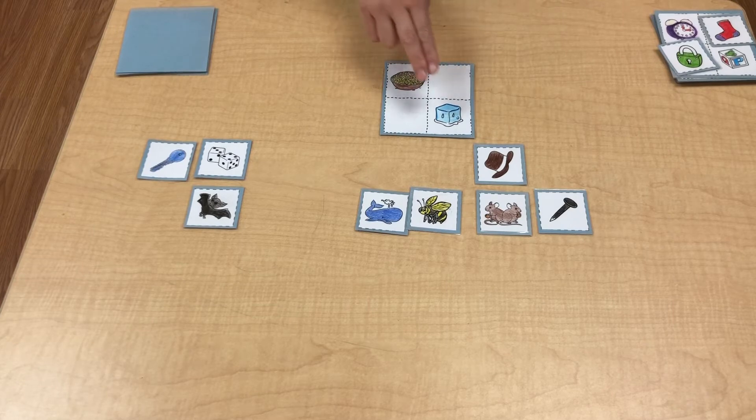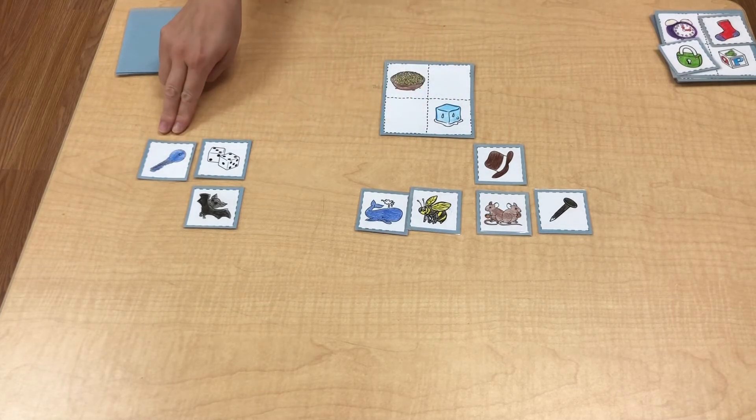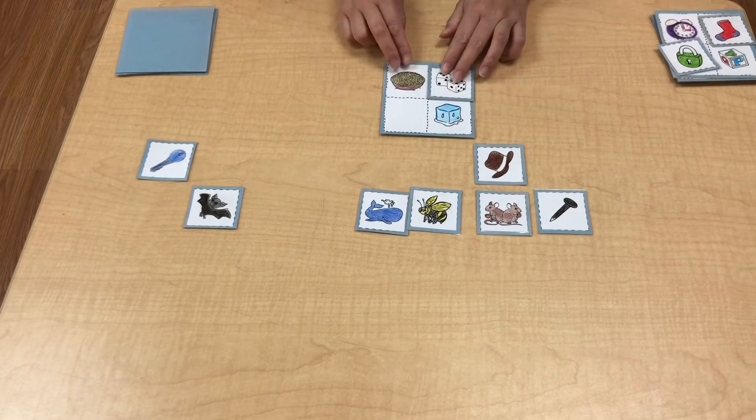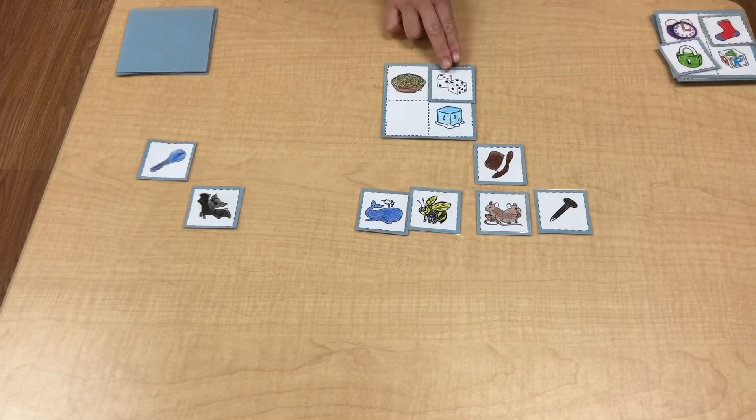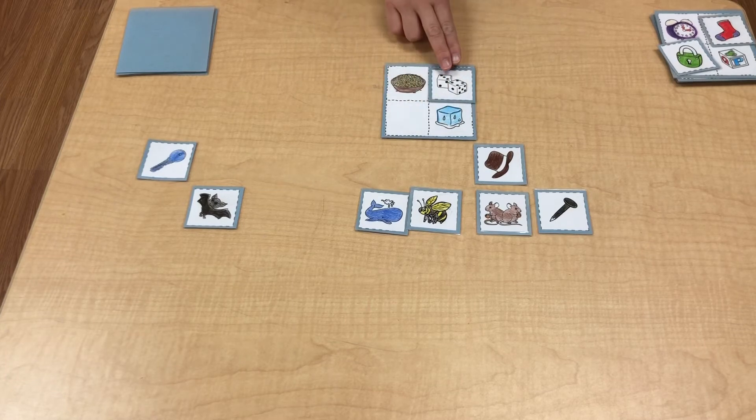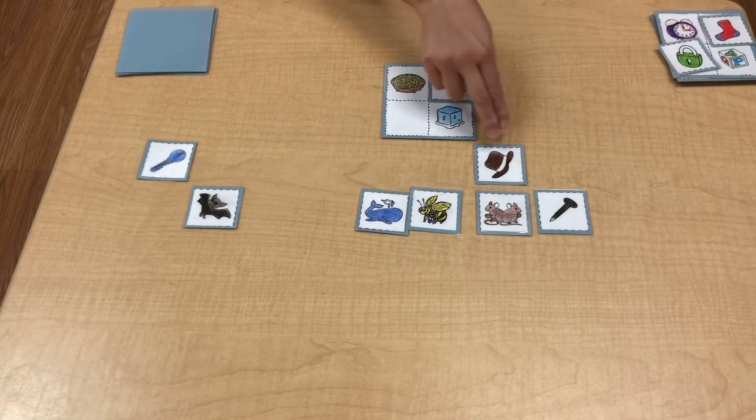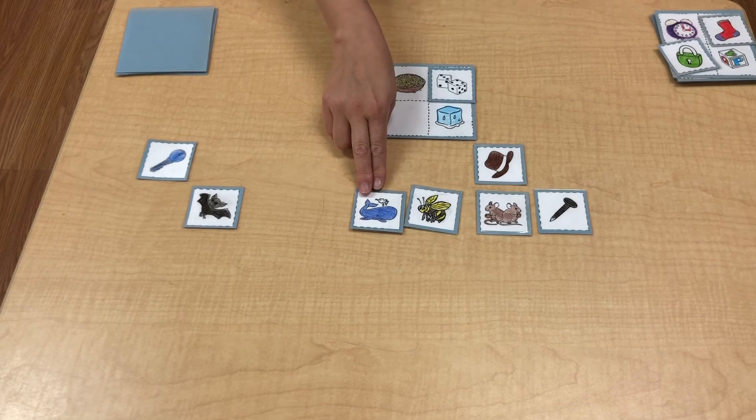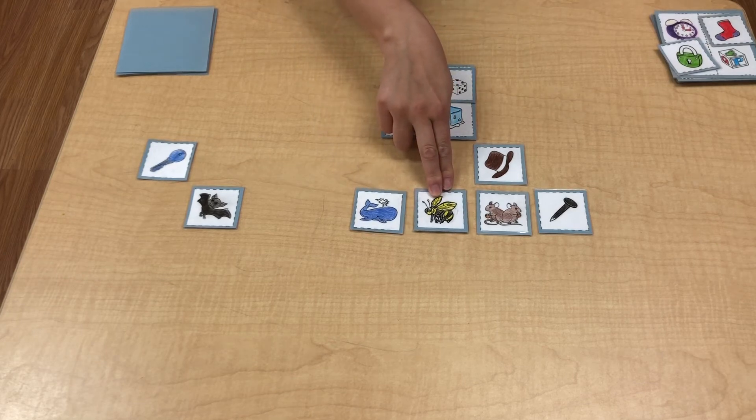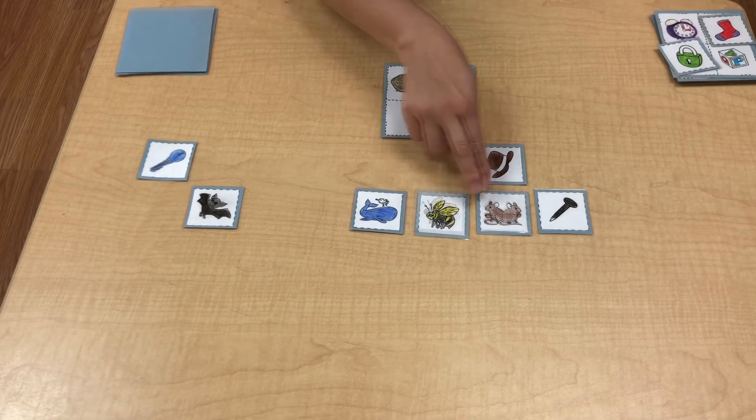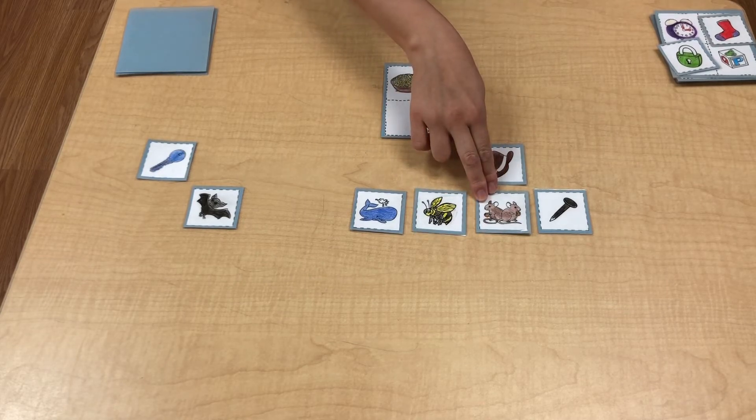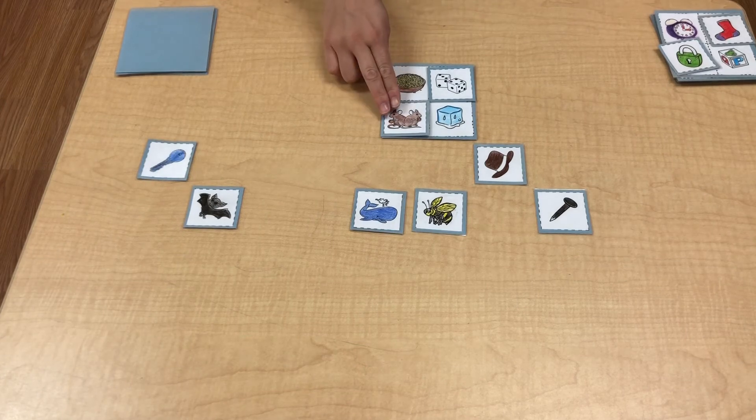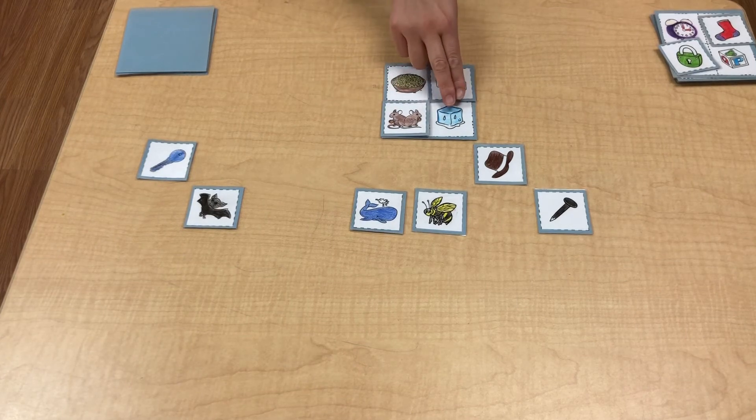Rice. Ice. Key. No. Dice. Yes. Rice. Dice. Ice. Dice. Hat. No. Bat. No. Whale. No. Bee. No. Mice. Yes. Rice. Mice. Ice. Mice.